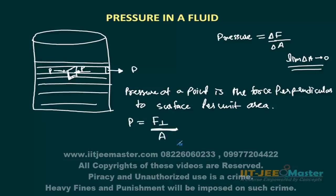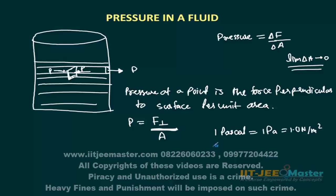The units of pressure: Pascal is one unit of pressure — 1 Pascal, written as 1 Pa, is equal to 1 Newton per meter squared. A few more units exist: 1 bar is equal to 10 to the power 5 Pascal.